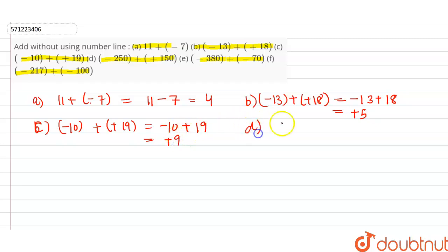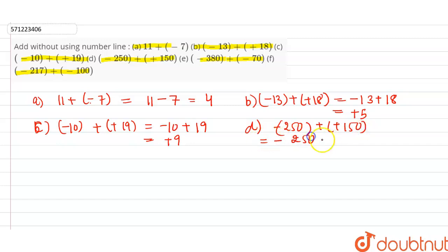Part D is –250 + (+150). Minus plus is minus and the sign will be of the greater one, so 250 – 150 is 100. The answer is –100.